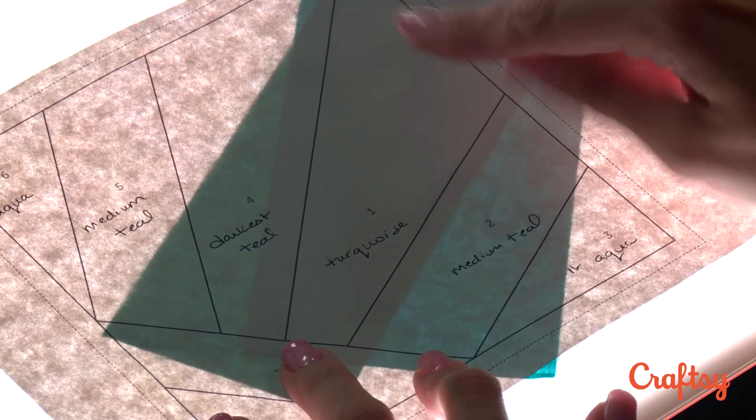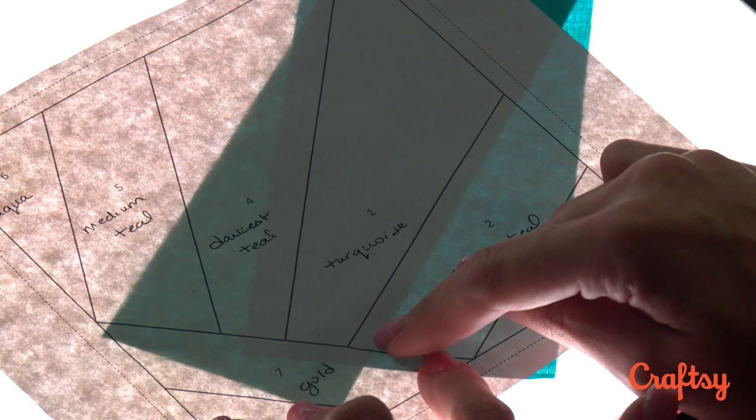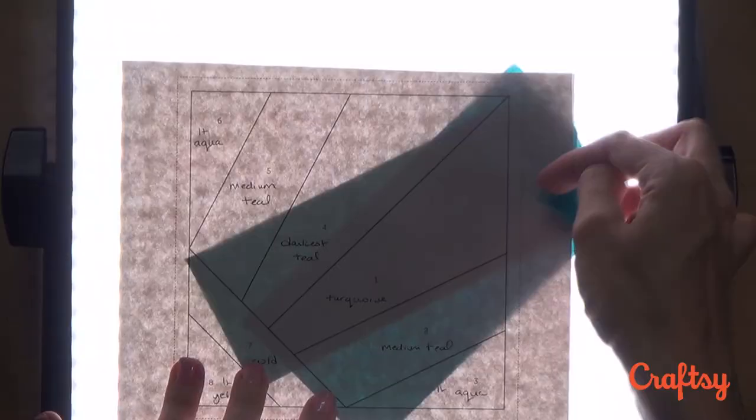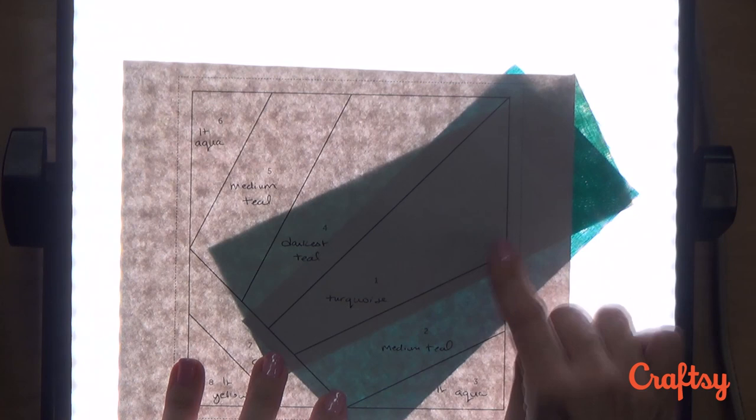So that means I'm going to place this right sides together with my number one section, my turquoise. You'll see this dark shadow here shows me where exactly my number two fabric is sitting right now. I've got about a quarter inch hanging out over that line between sections number one and number two. I've also got plenty of fabric out here to cover the seam allowance on the outside of the template and I've also got this triangle down here.